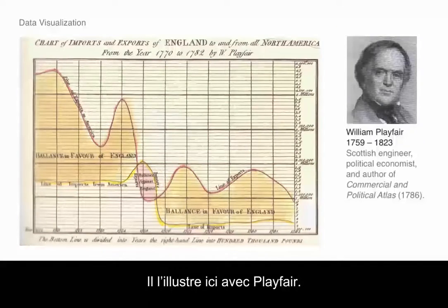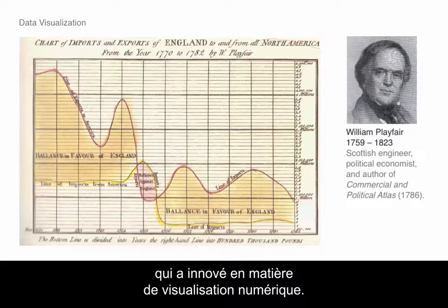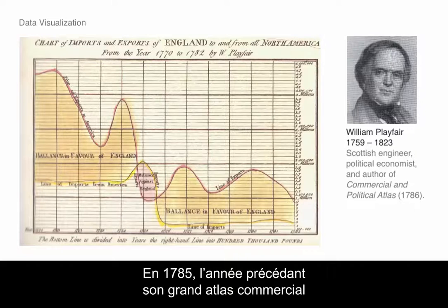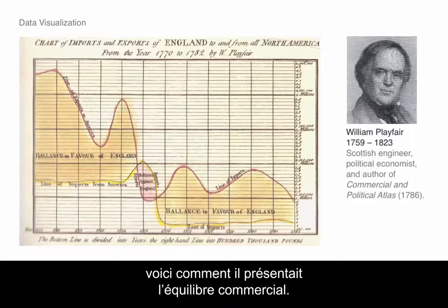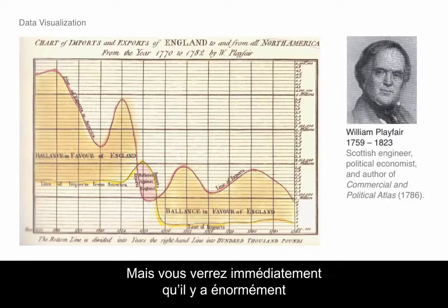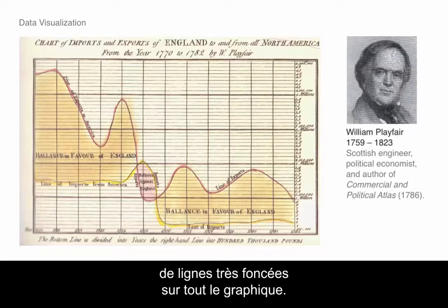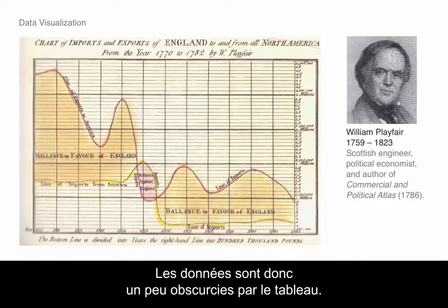Here he illustrates it with Playfair — this famous British economist who innovated in the space of data visualization. In 1785, the year before his great commercial atlas, this is how he was presenting the trade balance. You can see it's pretty clear what's going on. But immediately you notice there are tons of really dark gridlines all over the figure. They're pretty prominent — this gridline is actually thicker than the data line we care about.